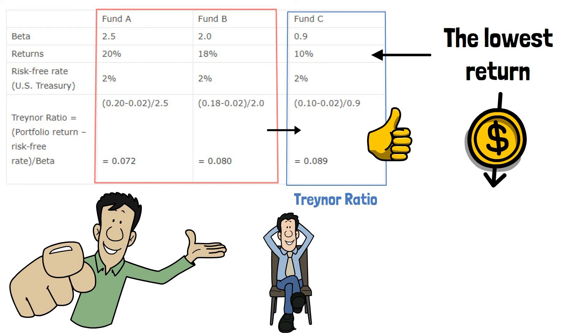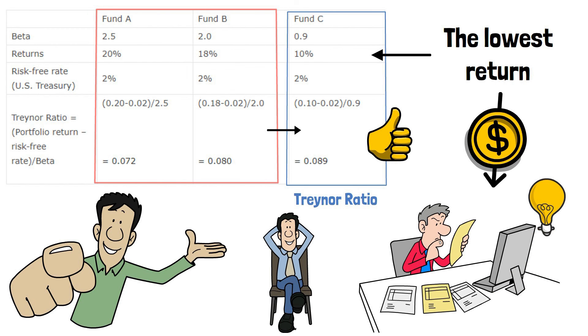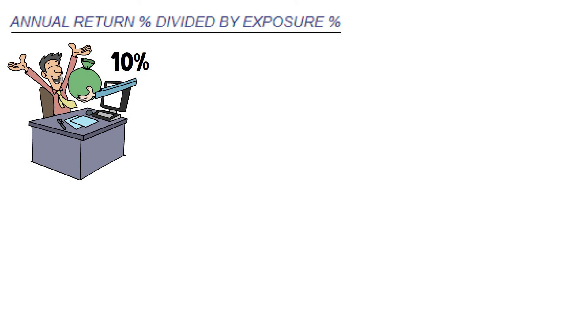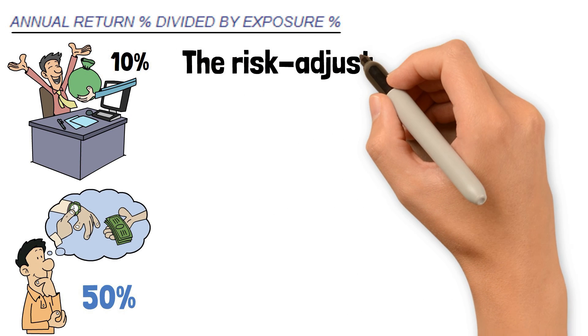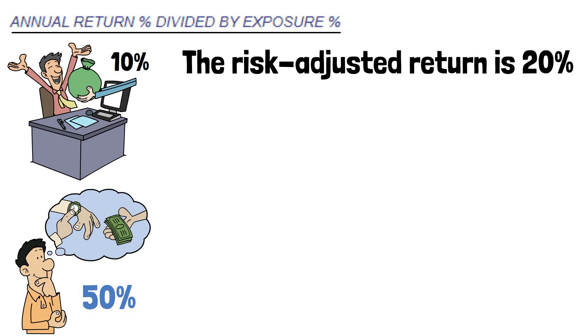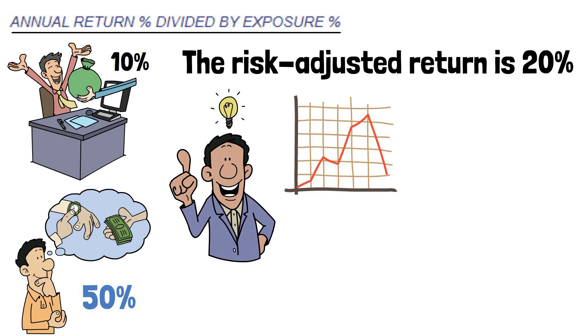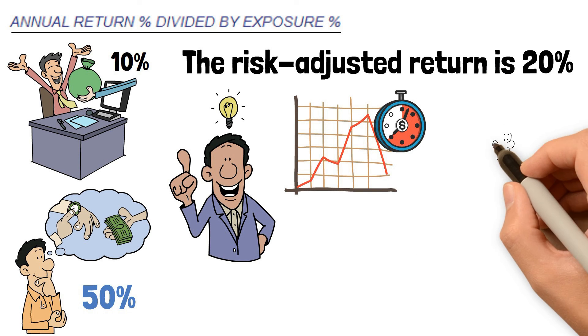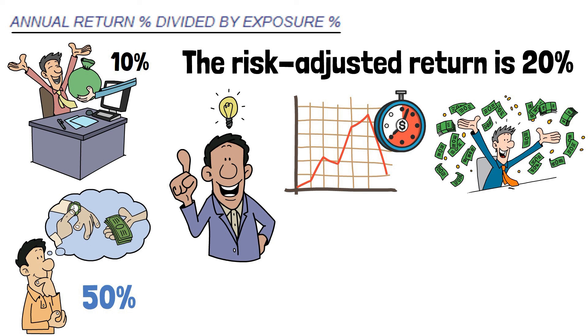Let's go to our fifth and last metric for risk-adjusted returns. This one is simple to calculate and is a good metric for short-term traders comparing different strategies. We take the annual return of the strategy and divide by the time spent invested. For example, if the annual return is 10% and the strategy is invested in the markets 50% of the time, the risk-adjusted return is 20%. The method makes intuitive sense: your capital is always at risk in the markets, and the less time you spend in the market, the lower the risk. If you can accomplish the same return with significantly less time spent in the market, the better.